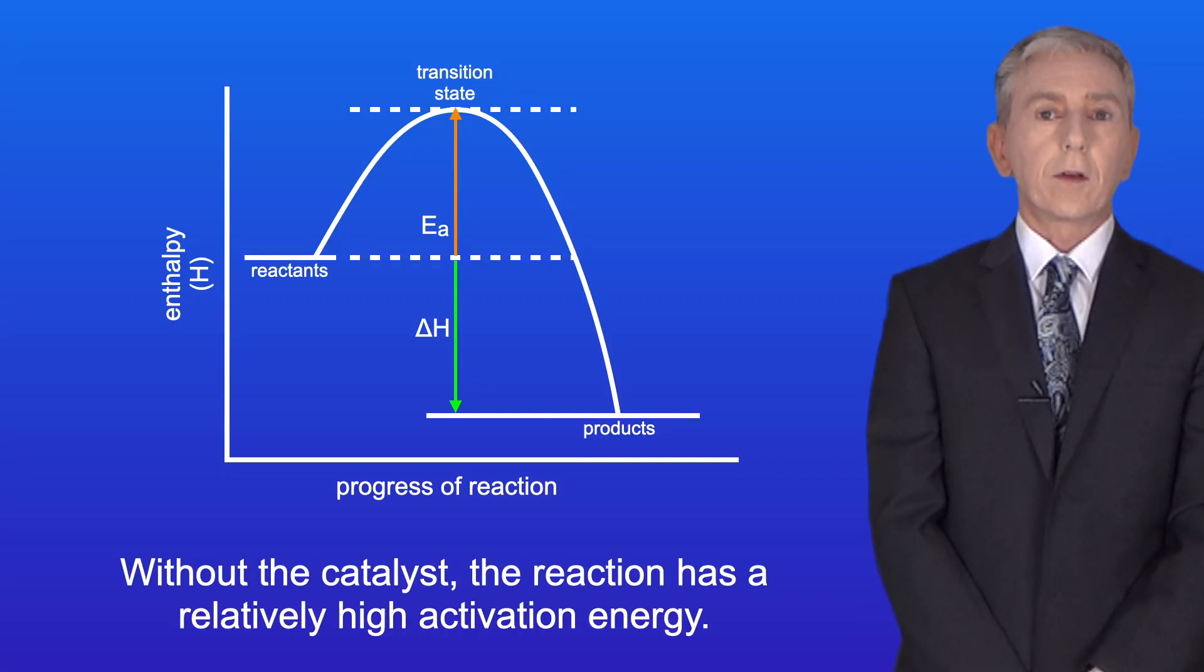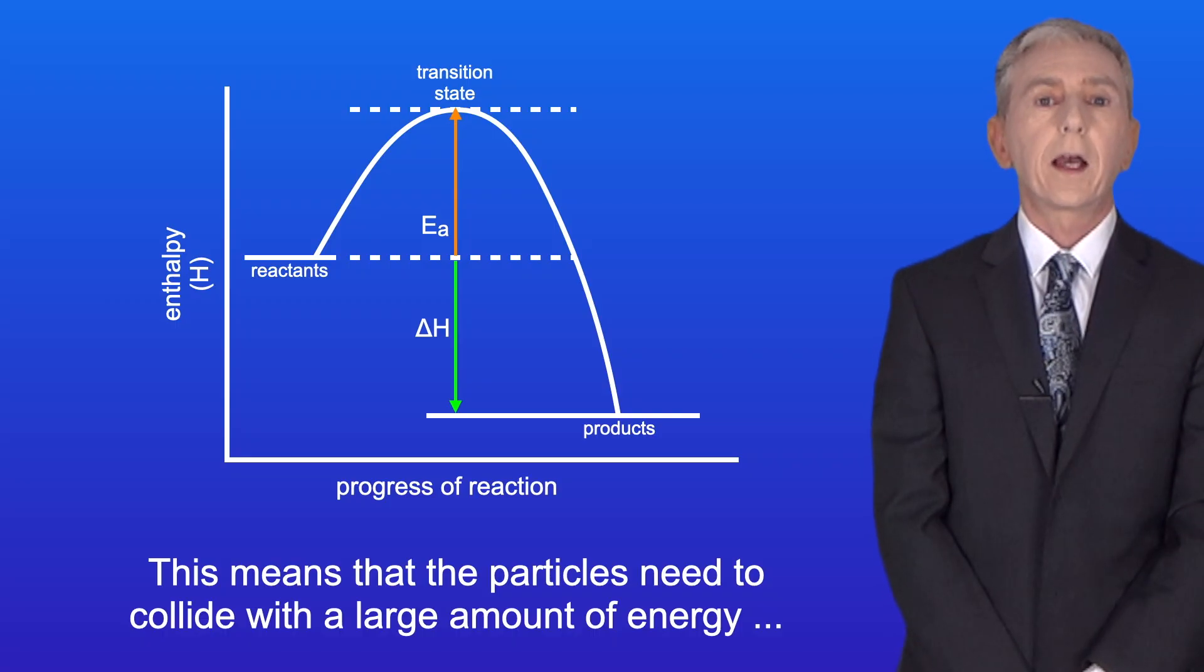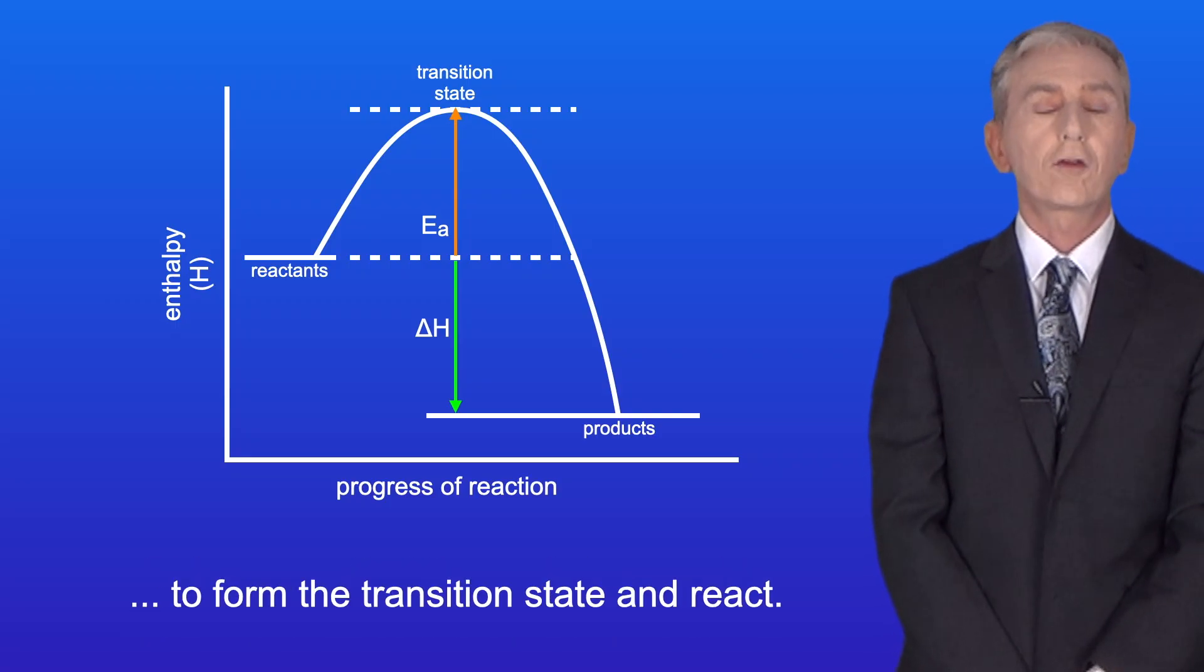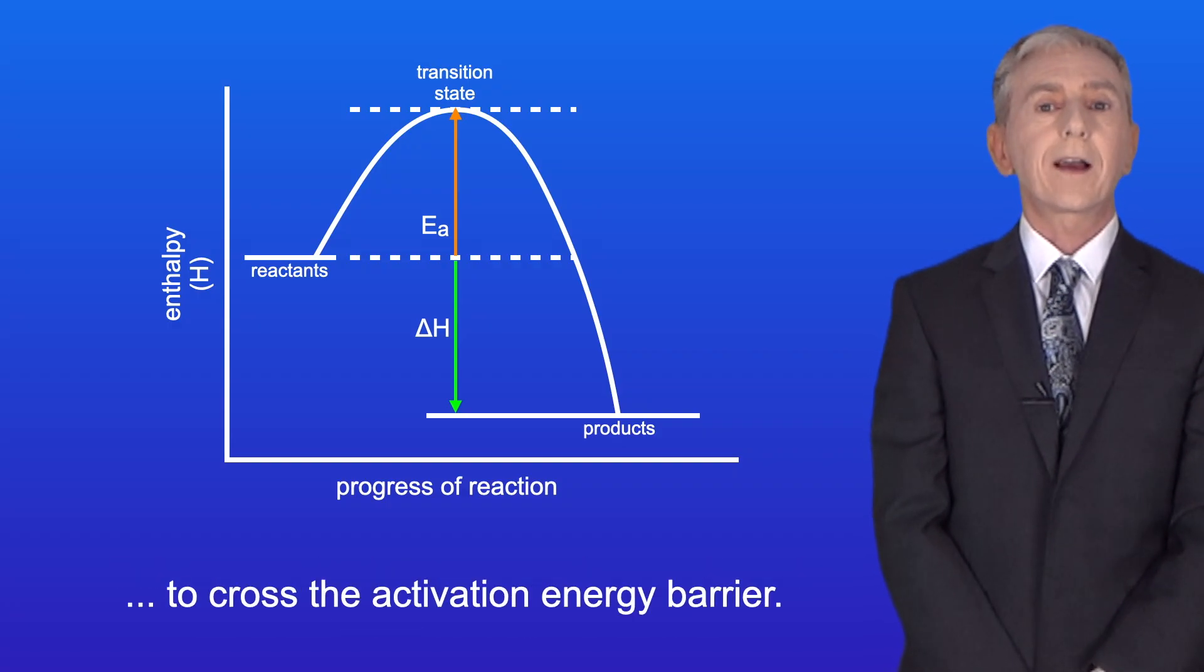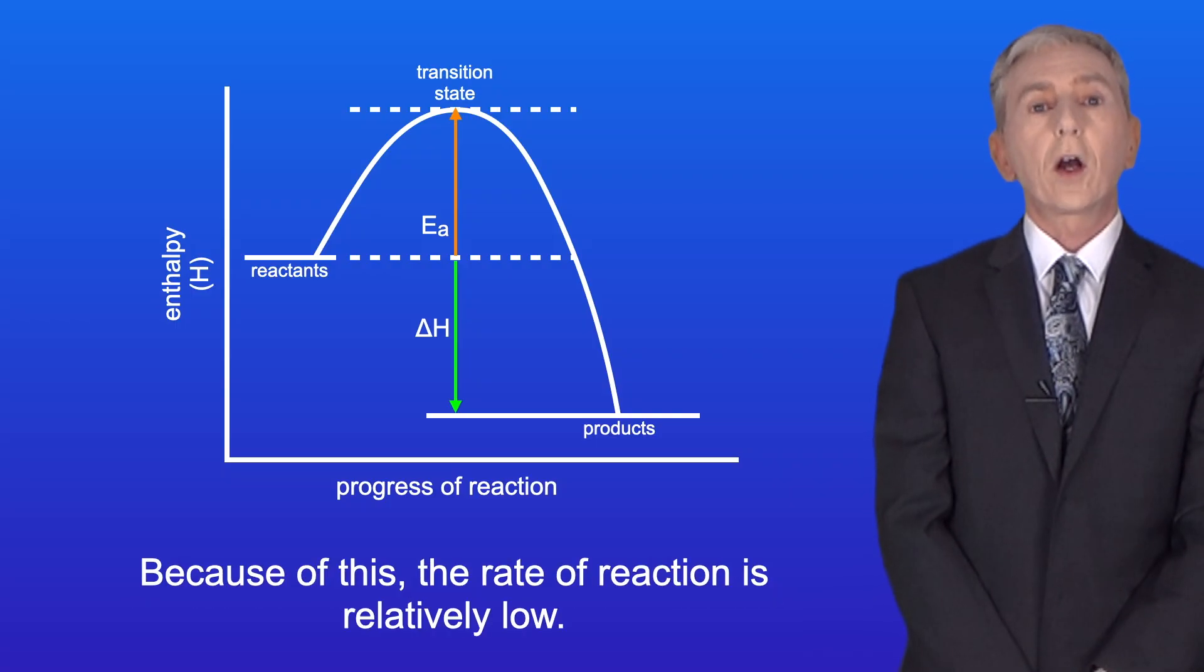Without the catalyst, the reaction has a relatively high activation energy. This means that the particles need to collide with a large amount of energy to form the transition state and react. So this means that only a small proportion of particles have enough energy to cross the activation energy barrier. And because of this, the rate of reaction is relatively low.